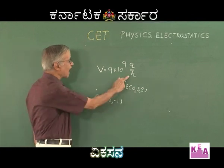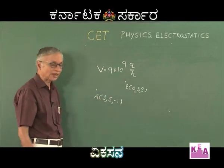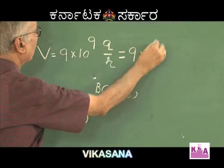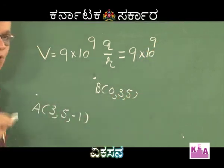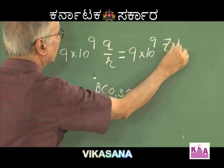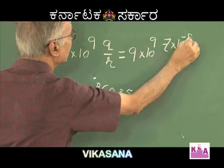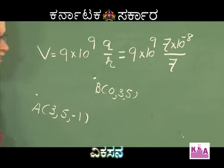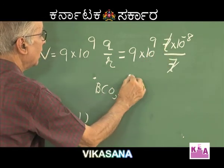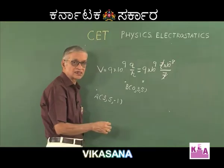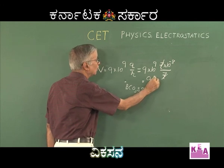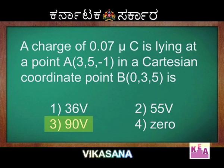Hence R = 7. Writing it out: V = 9×10⁹ × (0.07 microcoulomb) / 7. The charge 0.07 microcoulomb can be written as 7×10⁻⁸ coulomb divided by distance 7. You can easily see that 7 cancels with 7, and 10⁹ × 10⁻⁸ = 10¹ = 10, so 10×9 = 90 volt. Therefore, the third alternative is the correct answer.